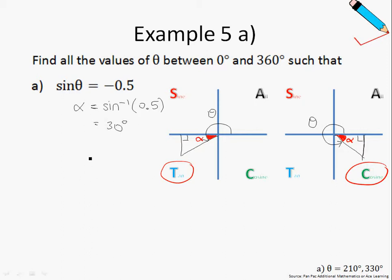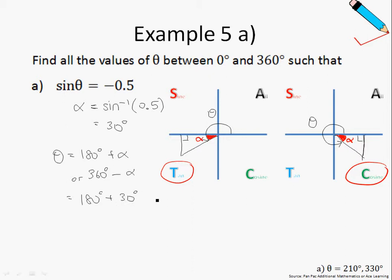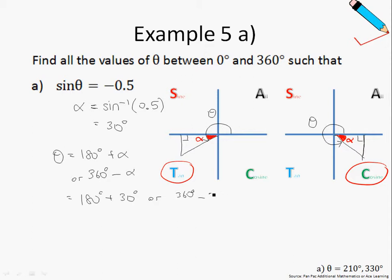Make sure that your calculator is in degree mode. To find θ, there are two possible values. In the first scenario, θ will be equal to 180 degrees plus alpha. In the second scenario, θ is equal to 360 degrees minus alpha. Substituting our value of alpha: 180 degrees plus 30 gives 210 degrees, and 360 degrees minus 30 gives 330 degrees. So the final values are 210 degrees or 330 degrees.